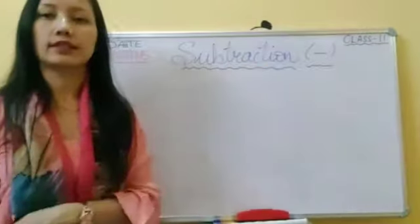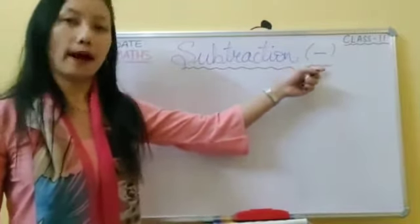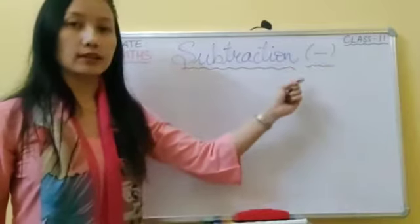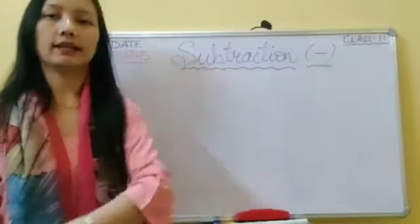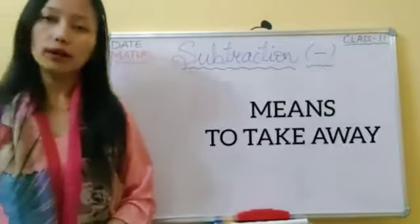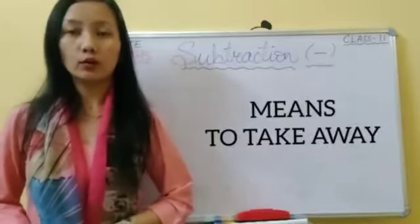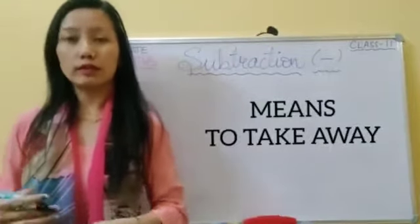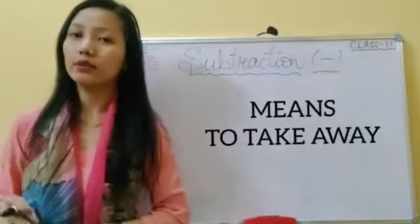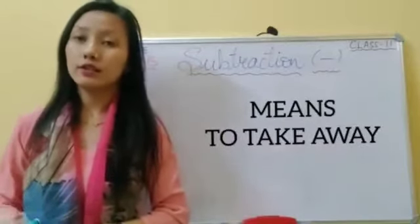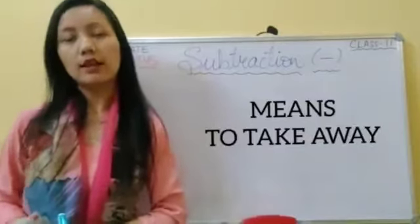Subtraction. Here you can see the minus sign — subtraction is denoted by this sign. What is subtraction? Subtraction means to take away a group or a number of things. When we subtract, the number of things in the group reduces or becomes less. Subtraction is just the opposite of addition. Now let's do some examples.